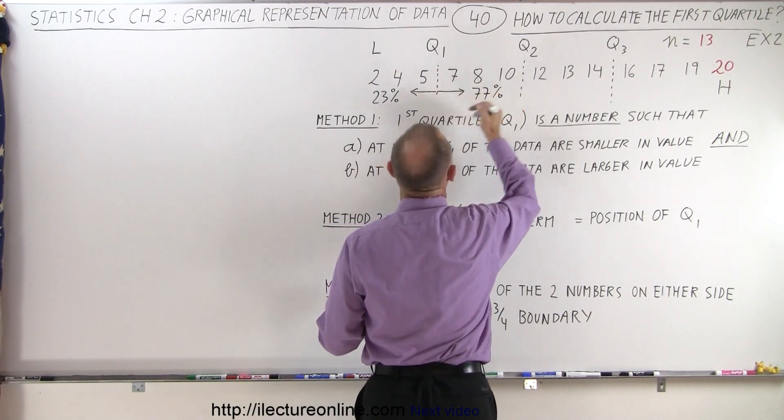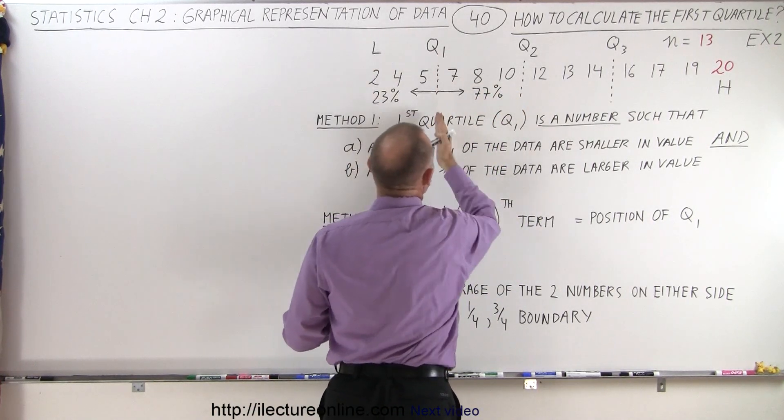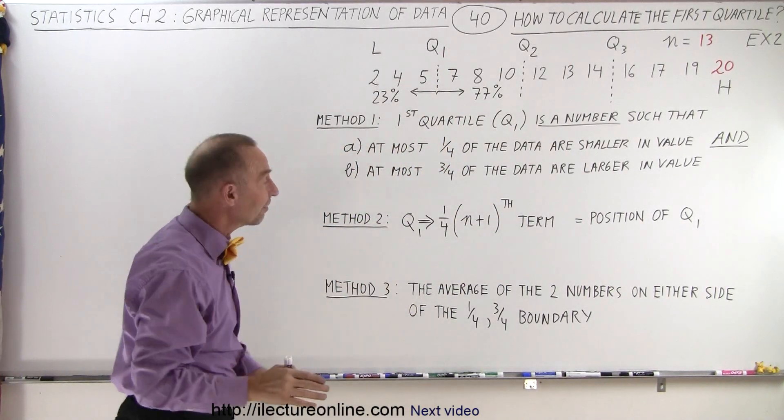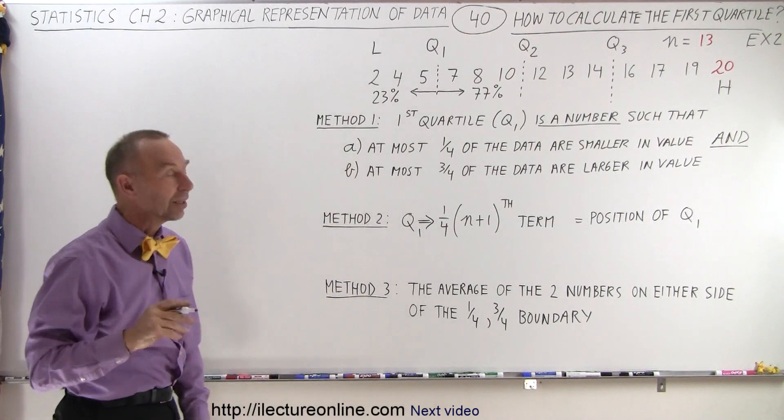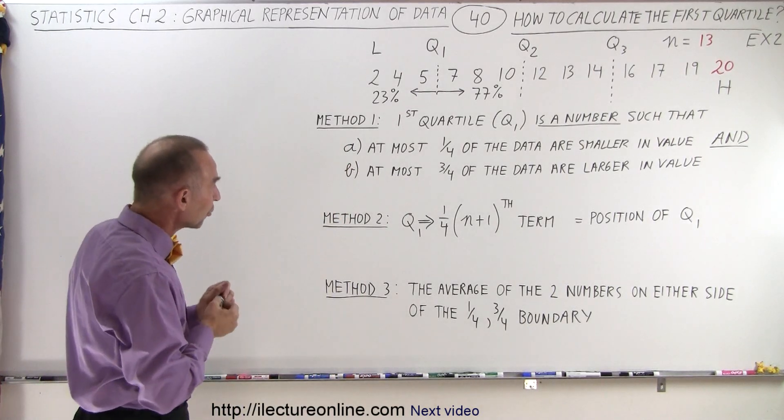So you can see that clearly the 25% point still falls between 5 and 7, which is something that we need for method number three. But now let's again think about how to approach this.